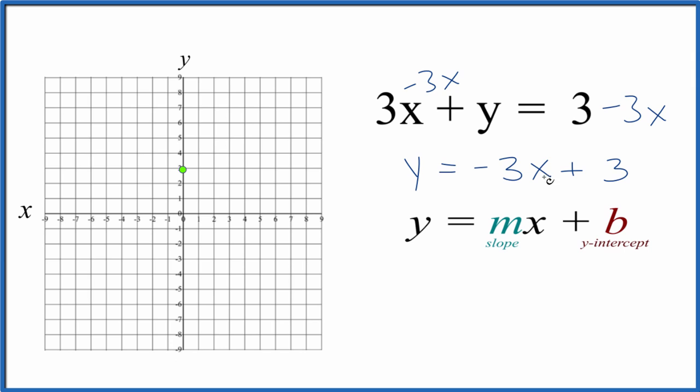Next, instead of just negative 3, let's call it negative 3 over 1. We're just dividing by 1. We don't change anything, but now we can say rise over run.